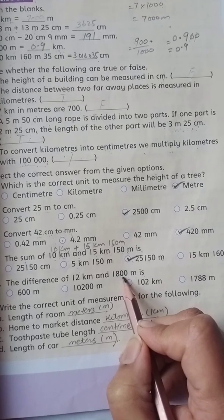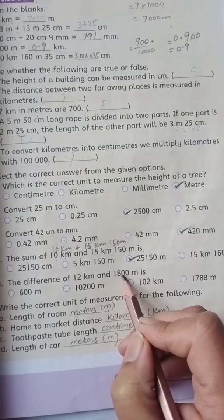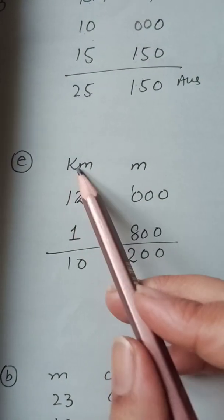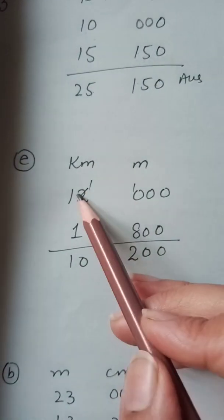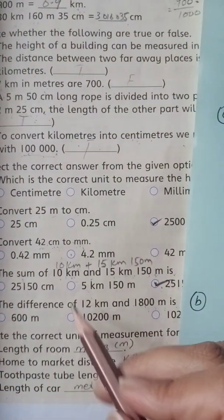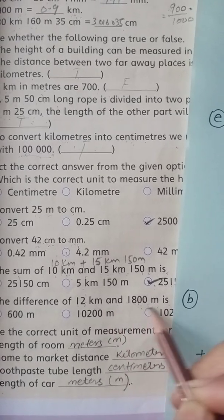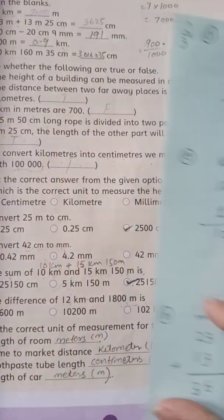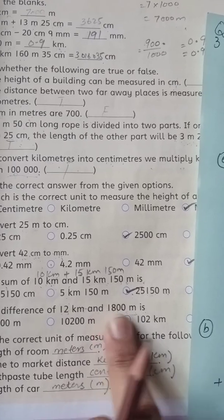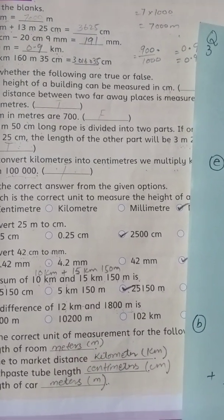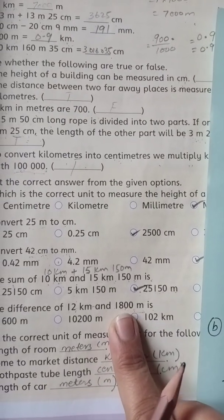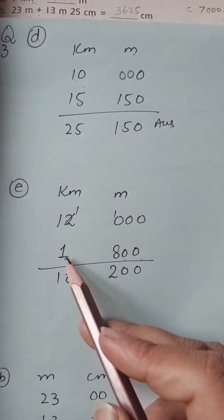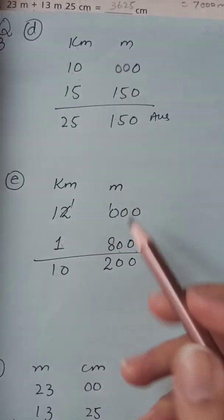We set up the subtraction: 12 kilometers minus 1 kilometer 800 meters. In the meters column, we have 0 minus 800. Since we cannot subtract 800 from 0, we borrow from the kilometers column. This leaves 11 kilometers in the kilometer column, and we get 1000 meters to work with, so 1000 minus 800 equals 200 meters.